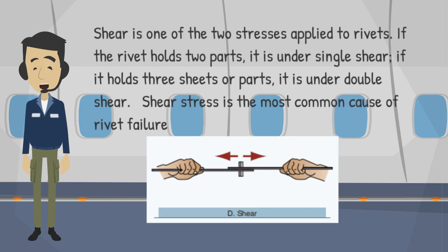Shear is one of the two stresses applied to rivets. If the rivet holds two parts, it is under single shear. If it holds three sheets or parts, it is under double shear. Shear stress is the most common cause of rivet failure.